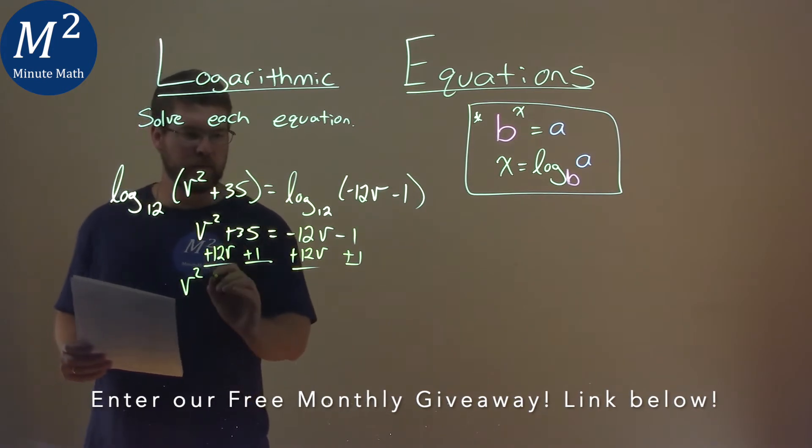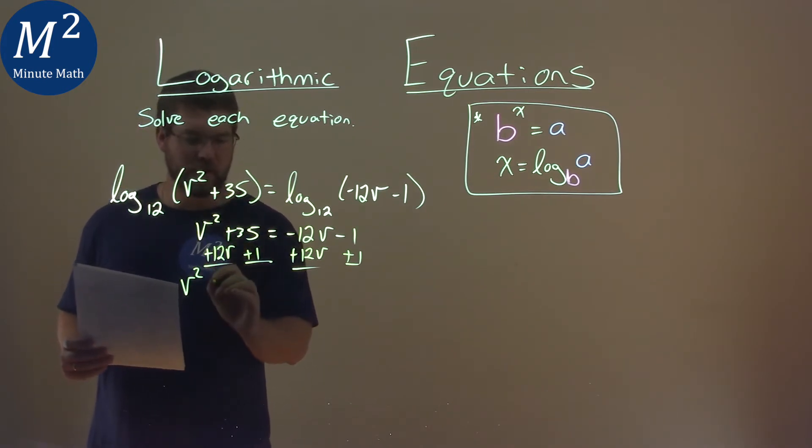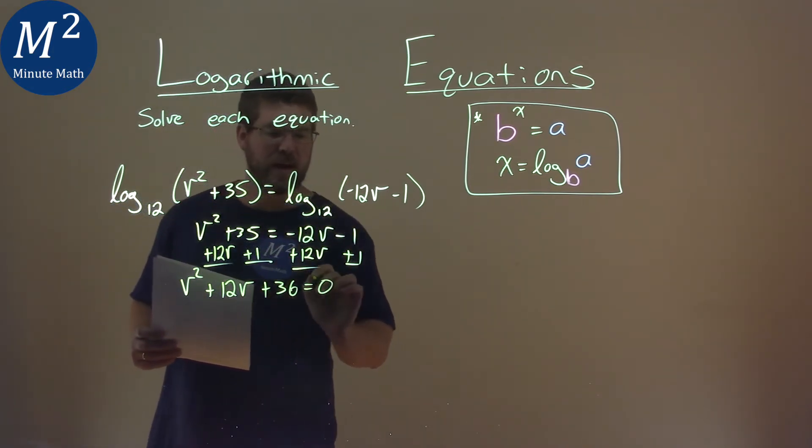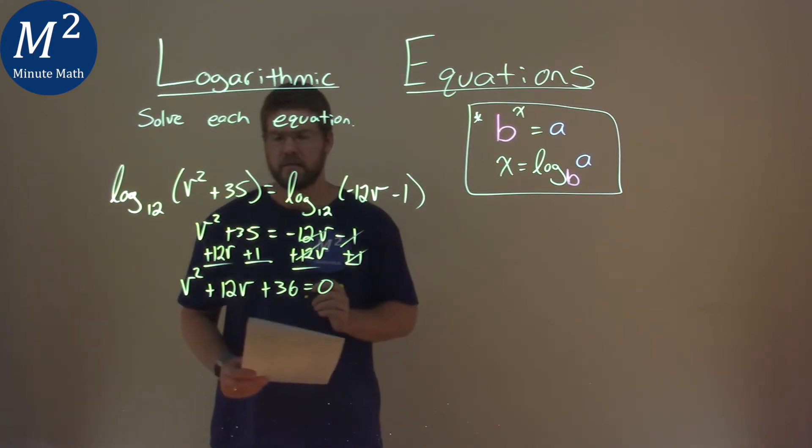v squared is the only thing there, or only variable squared, and we have 12v here, and 35 plus 1 is 36. And that's equal to zero, because everything canceled out on the right-hand side.